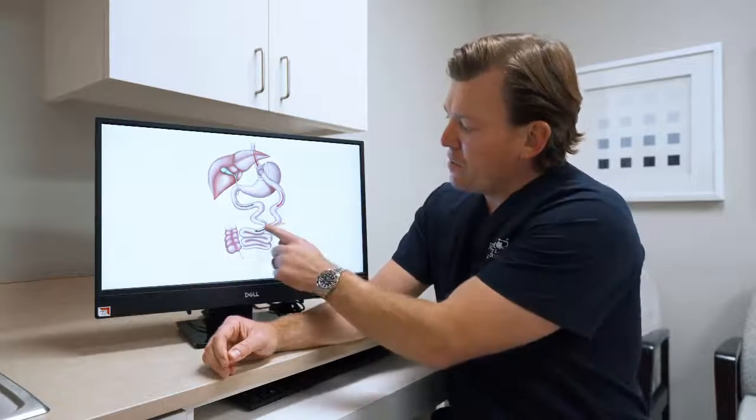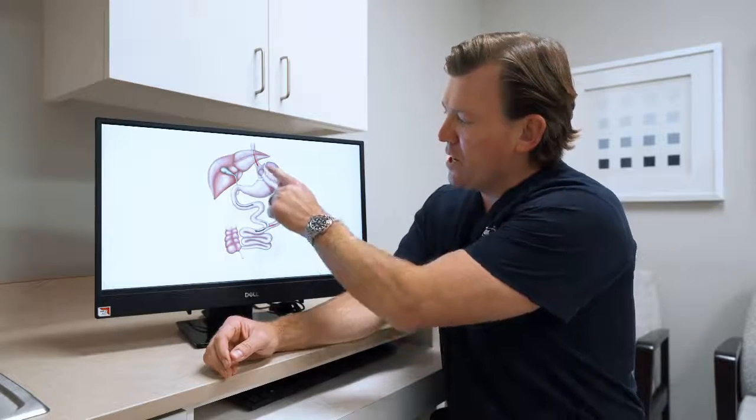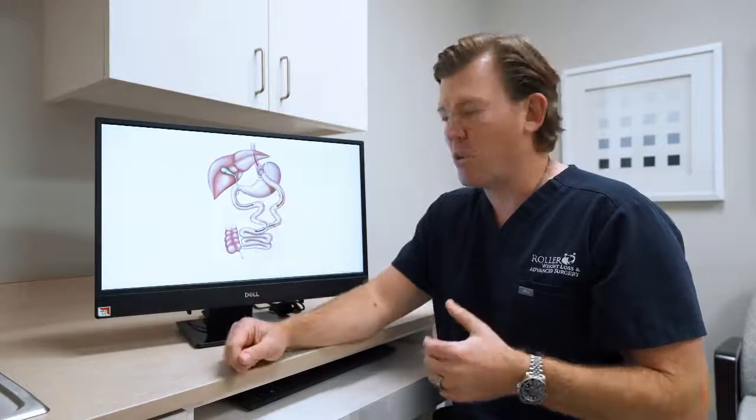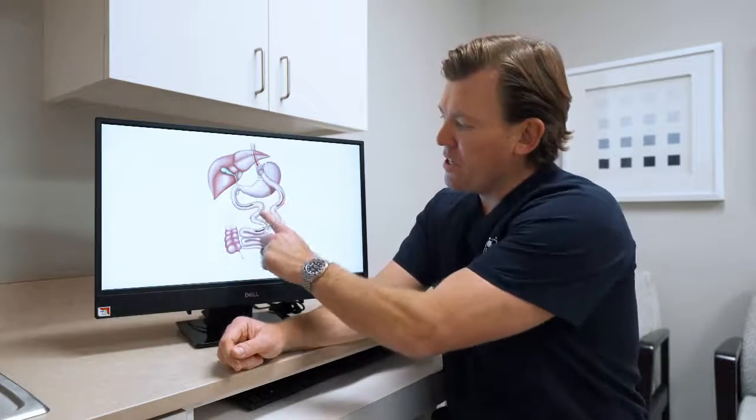The next step is we divide the small intestine here and we bring one end up to the pouch and hook it up with a stapling device and also sewing it and we hook the other end downstream.